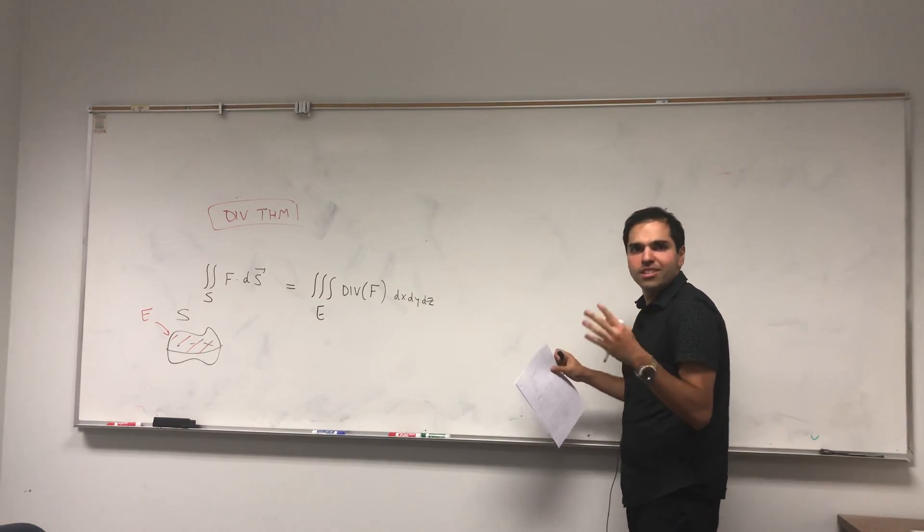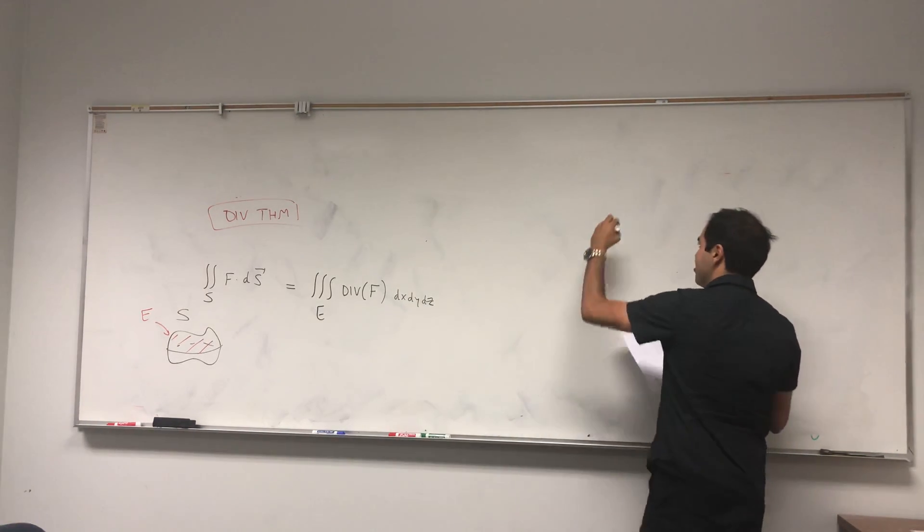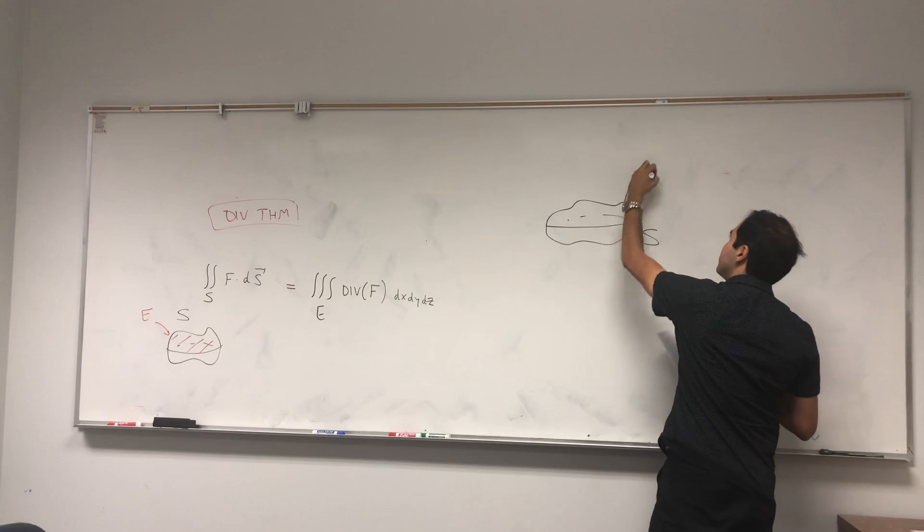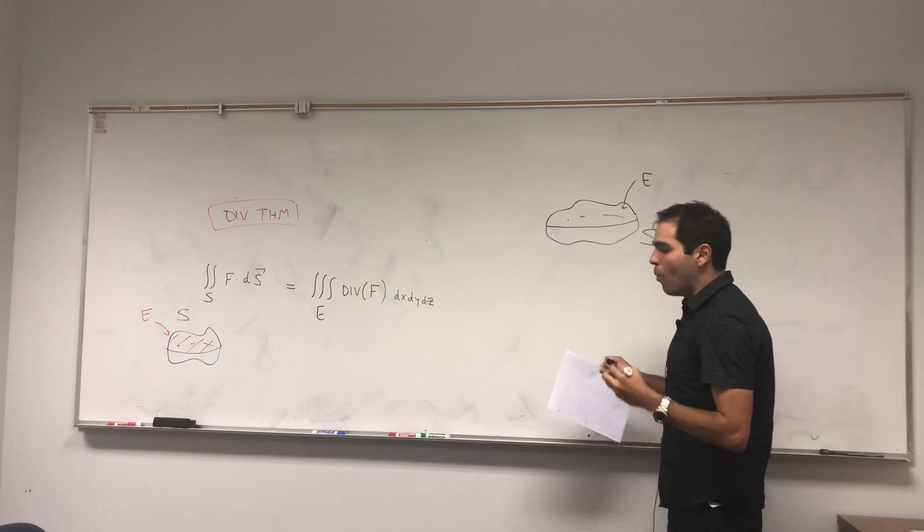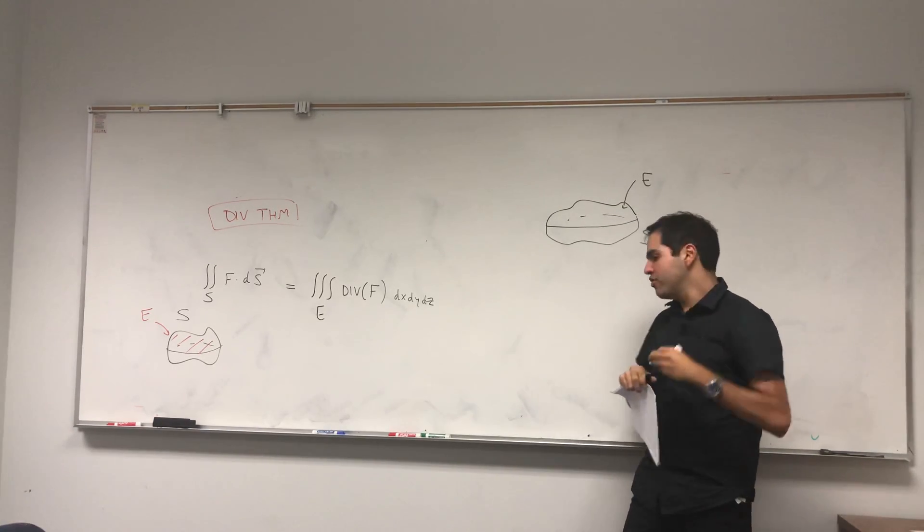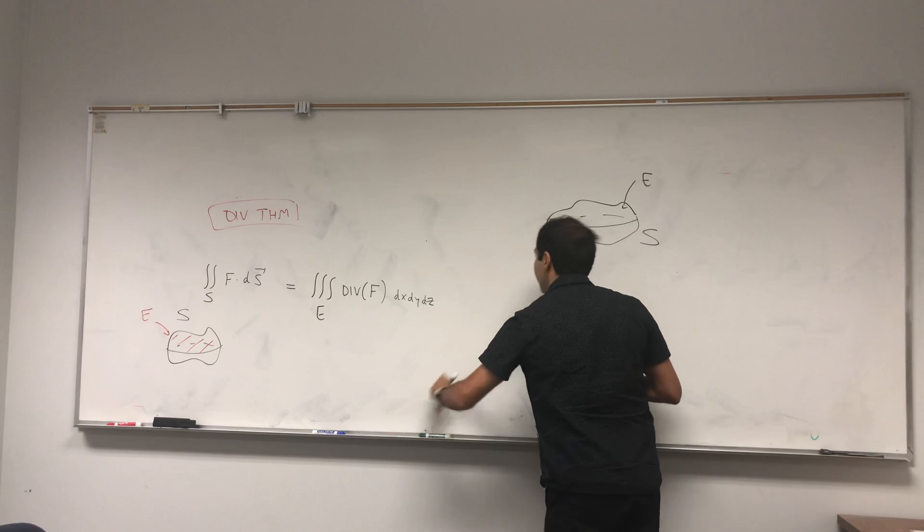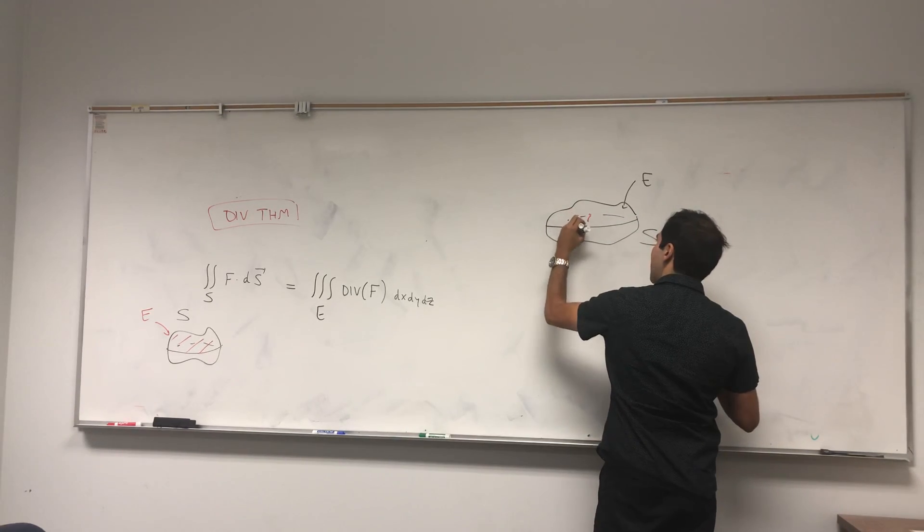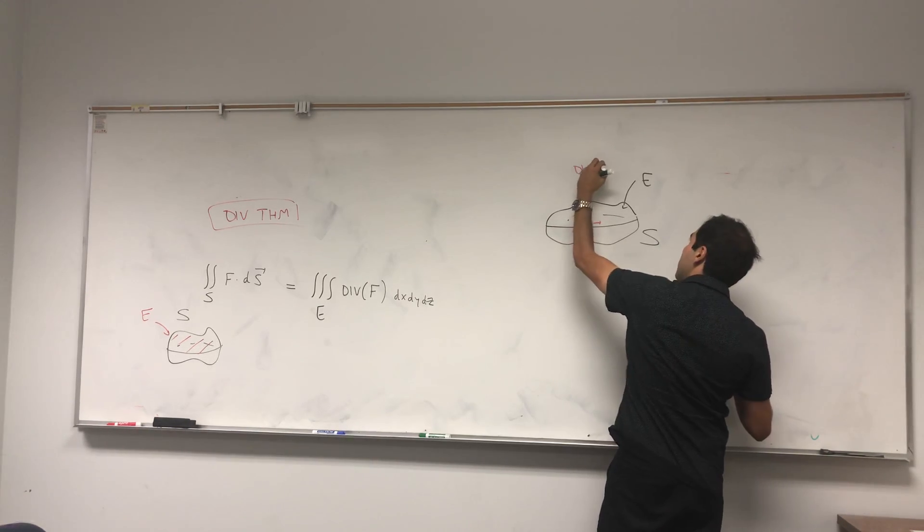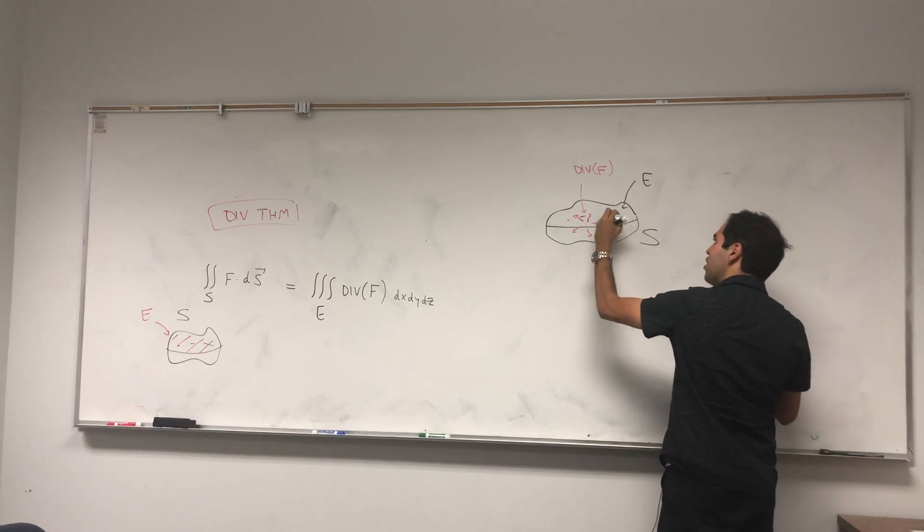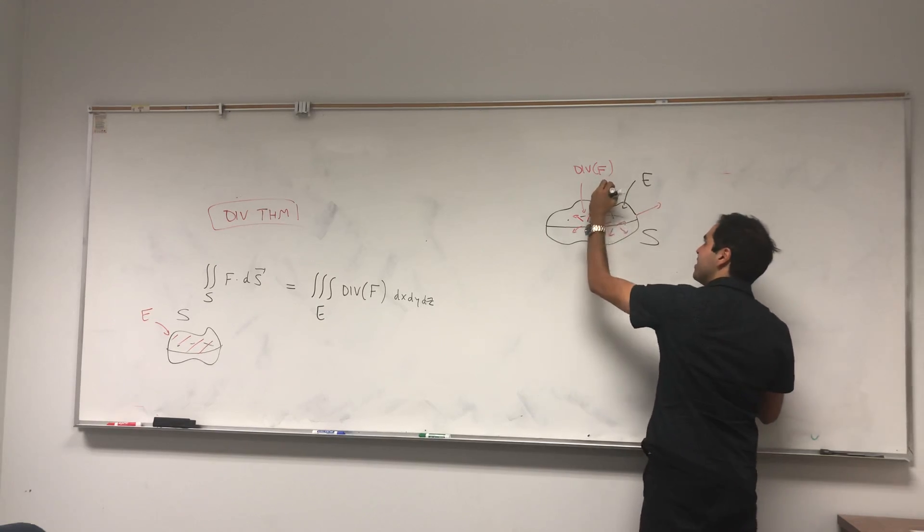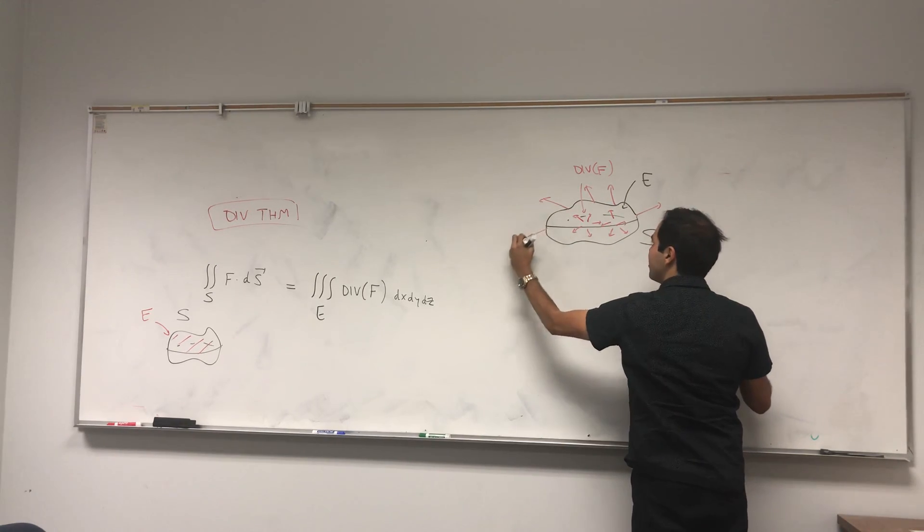Let me first explain why this makes sense. Suppose you have a surface that encloses a region E. What is the divergence? It's basically a number that explains how much your vector field expands. At every point you have those little expansions - the divergence of f. The idea is if you add up those little expansions, you get the actual expansion of your vector field on your surface.